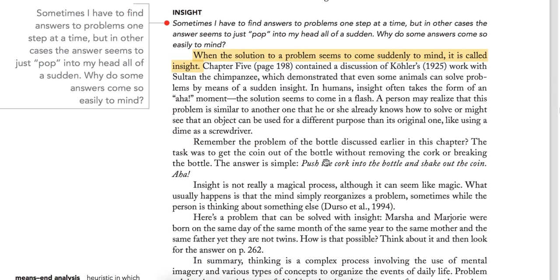The next method is insight. We have studied about chimpanzee Sultan in operant conditioning. Wolfgang Köhler experimented on insight learning. What is insight learning? When the solution of a problem seems to come suddenly to the mind — when a solution comes suddenly — we call that insight learning.